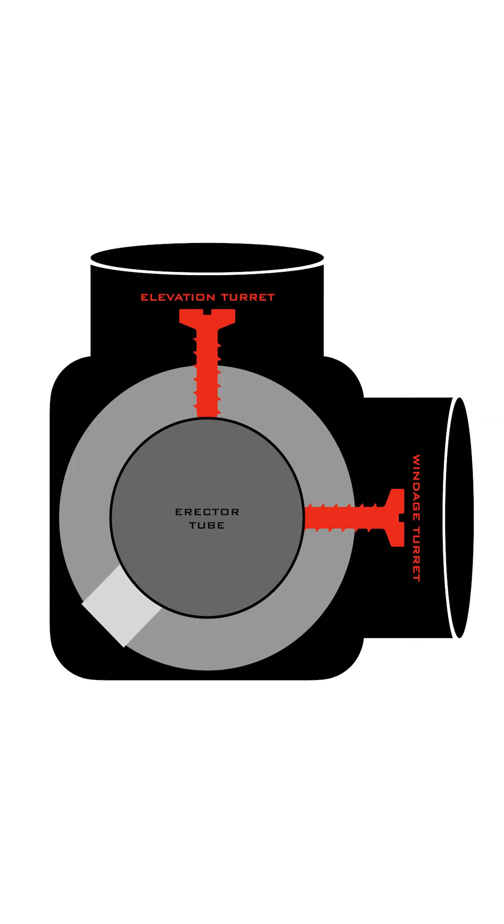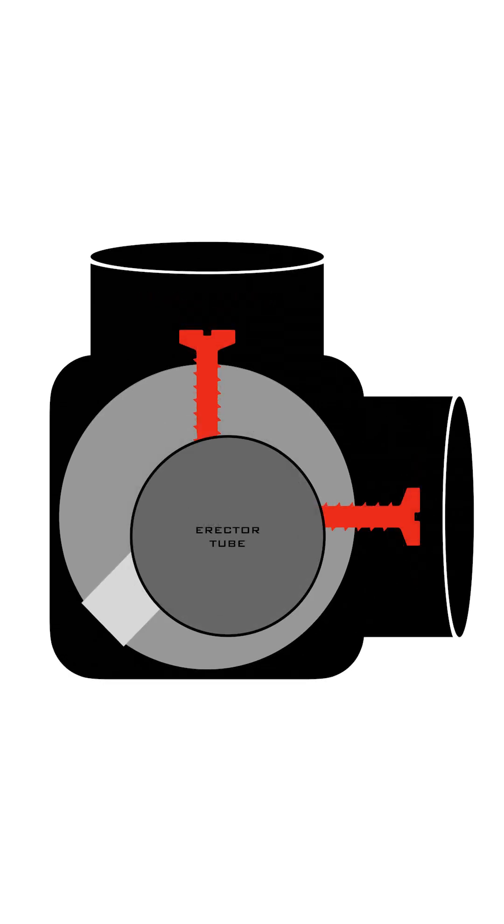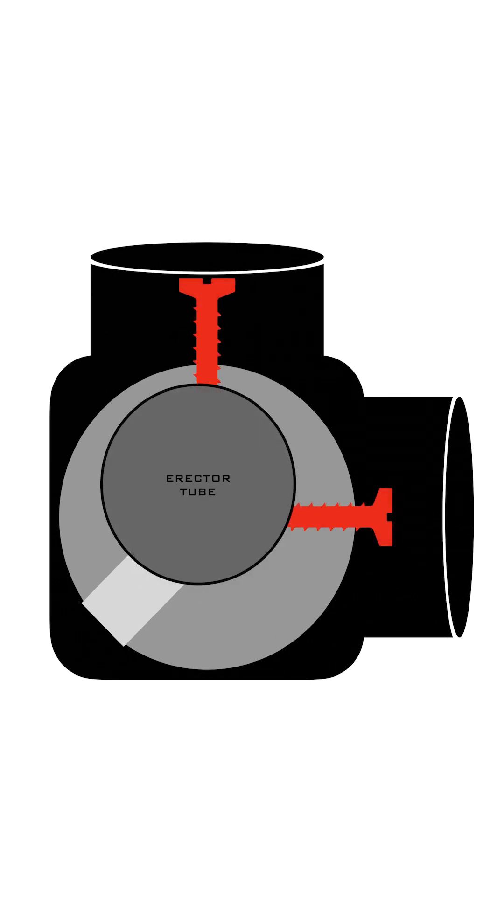The rear will be held in place and in the front your turrets press against the erector tube and from the opposite direction an erector spring will press back and this allows your erector tube to move very precisely and compensate for your shots.